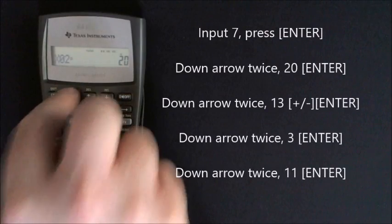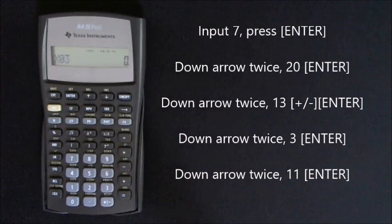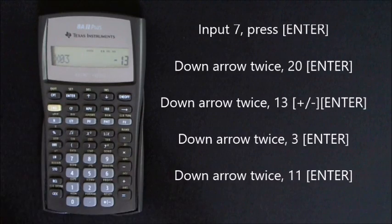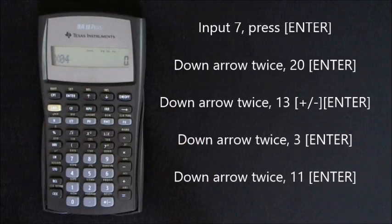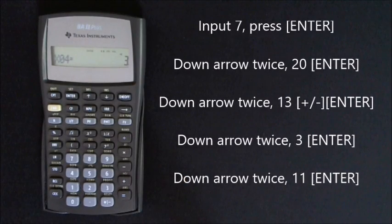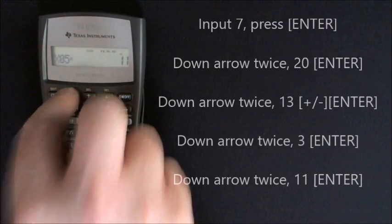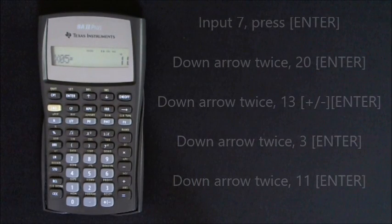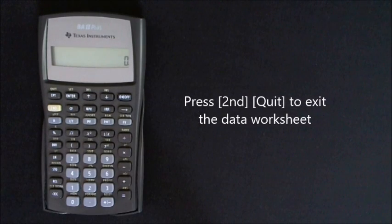So then 20, enter as X2 for the second year. And down twice again, and for Year 3 it's 13, and press the plus minus button, enter, because it's a minus figure. And then down twice again to enter the number 3, enter for the 3% in the fourth year. And down twice again to enter the number 11, enter for the fifth year. And then second, quit, to exit the data worksheet.